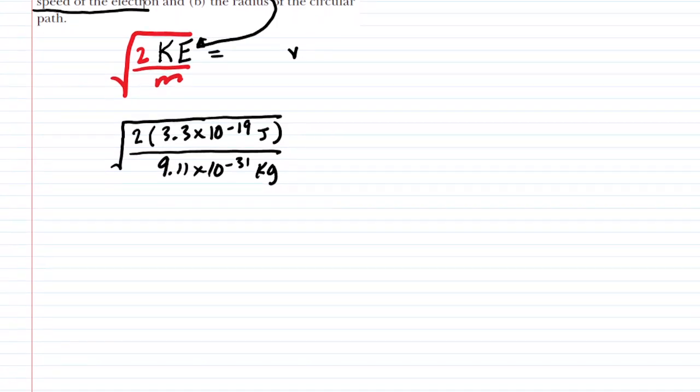We've gone ahead and plugged in all of the values. This is going to give us the speed. Notice the mass was looked up in the reference tables. When you punch this into your calculator you're going to get 851163. This is going to be meters per second. So that's an acceptable answer.